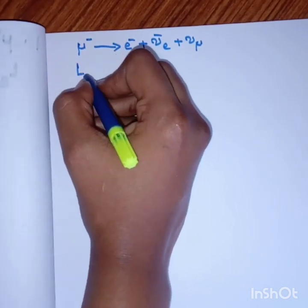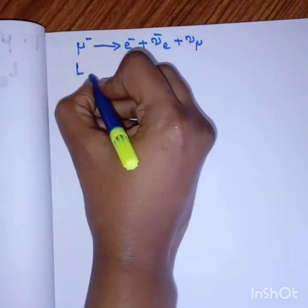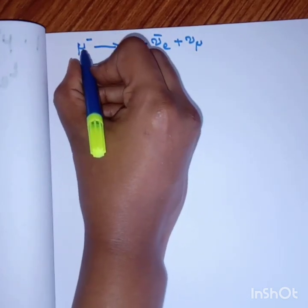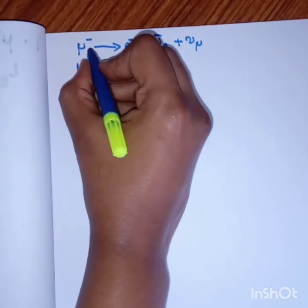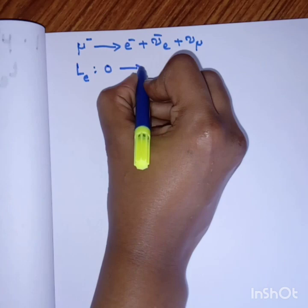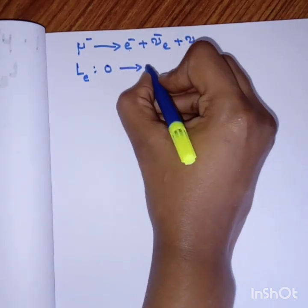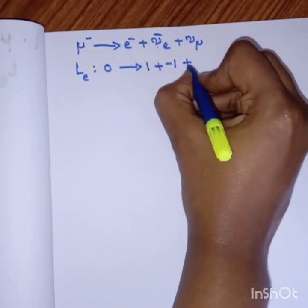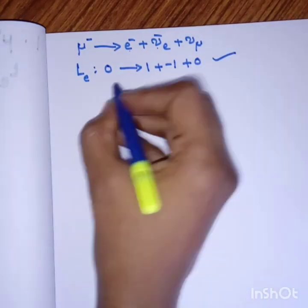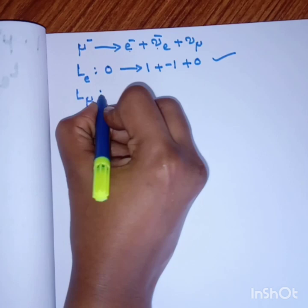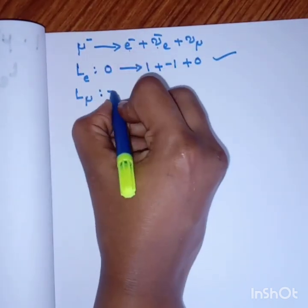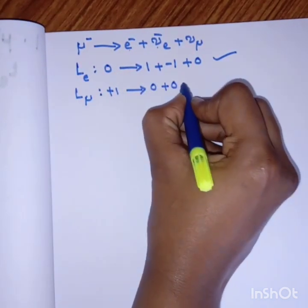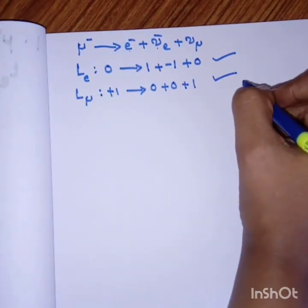For that, there are three families, so there are three lepton numbers. First, we check the electron-lepton number. For the muon, electron-lepton number is zero on the left side. On the right, electron has lepton number one and the antineutrino-electron has minus one, so zero plus zero equals zero — this is possible. Next, check the muon lepton number: muon has plus one on the left; on the right it's zero, zero, and plus one. This is possible.